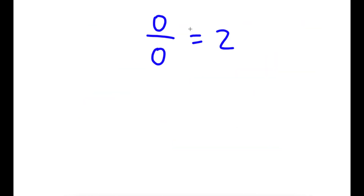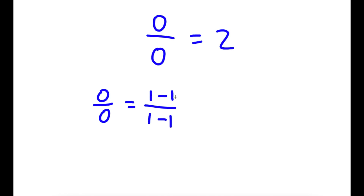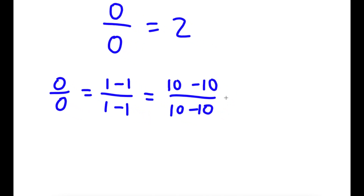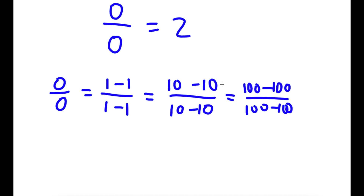I'm going to be proving that 0 divided by 0 is equal to 2. To do this I'm going to start with 0 divided by 0. This is the same thing as 1 minus 1 over 1 minus 1, because 1 minus 1 is 0. Now 1 minus 1 over 1 minus 1 is the same thing as 10 minus 10 over 10 minus 10 — again 10 minus 10 is 0, so I have 0 over 0. Now 10 minus 10 over 10 minus 10 is the same thing as 100 minus 100 over 100 minus 100, and 100 minus 100 is 0, so it's the same thing.